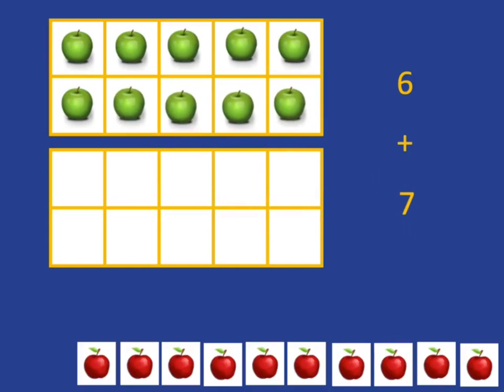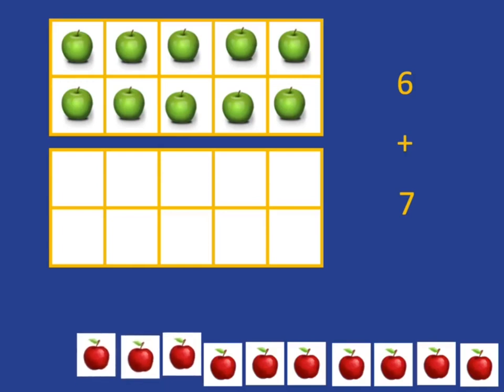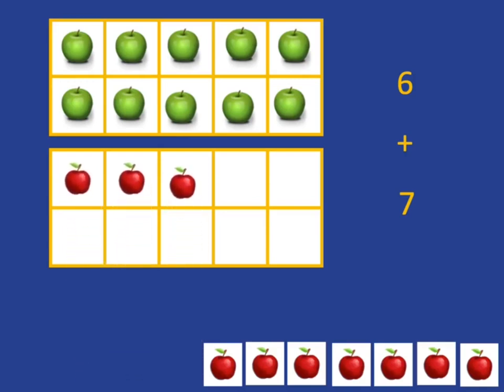But then we've only added on 4 so far and we actually needed to add on 7. So we need 3 more apples, and then we can very easily see that what we have here is 10 plus 3, which is 13. So 6 plus 7 gives me 13.